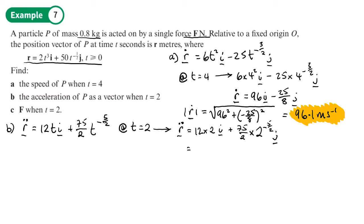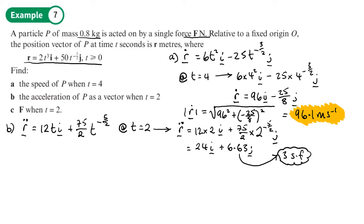That gives us 24i, and the j part works out to 6.63 to three significant figures, so the acceleration vector is 24i + 6.63j. The question says to leave the acceleration as a vector, so we leave it in that form.